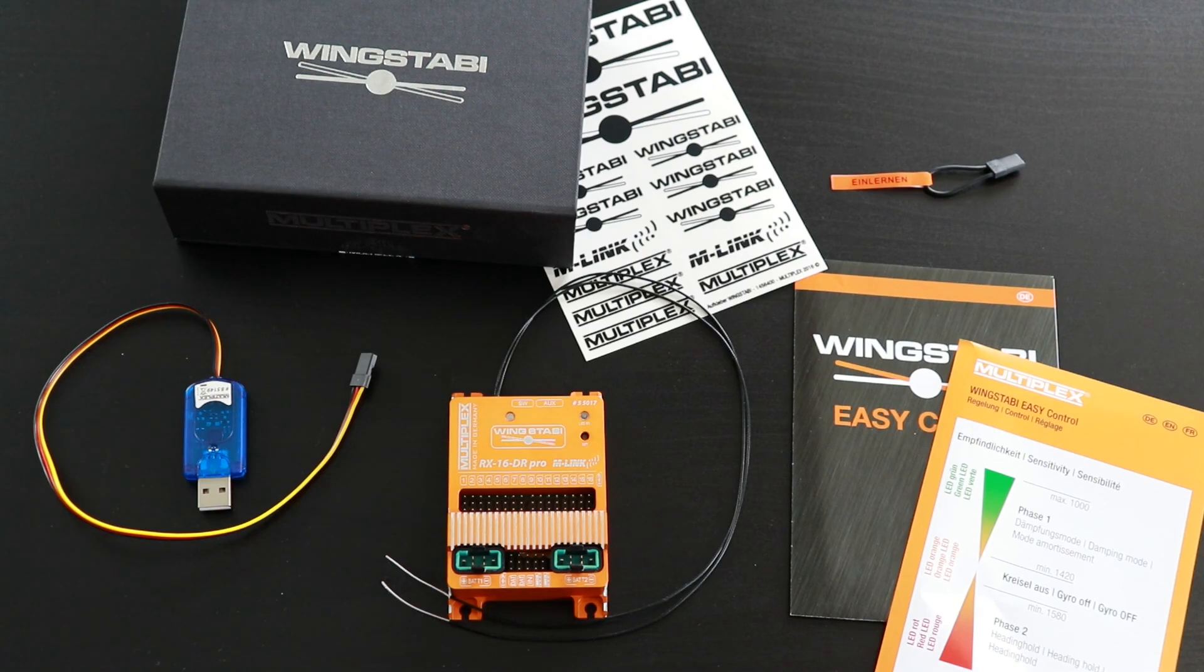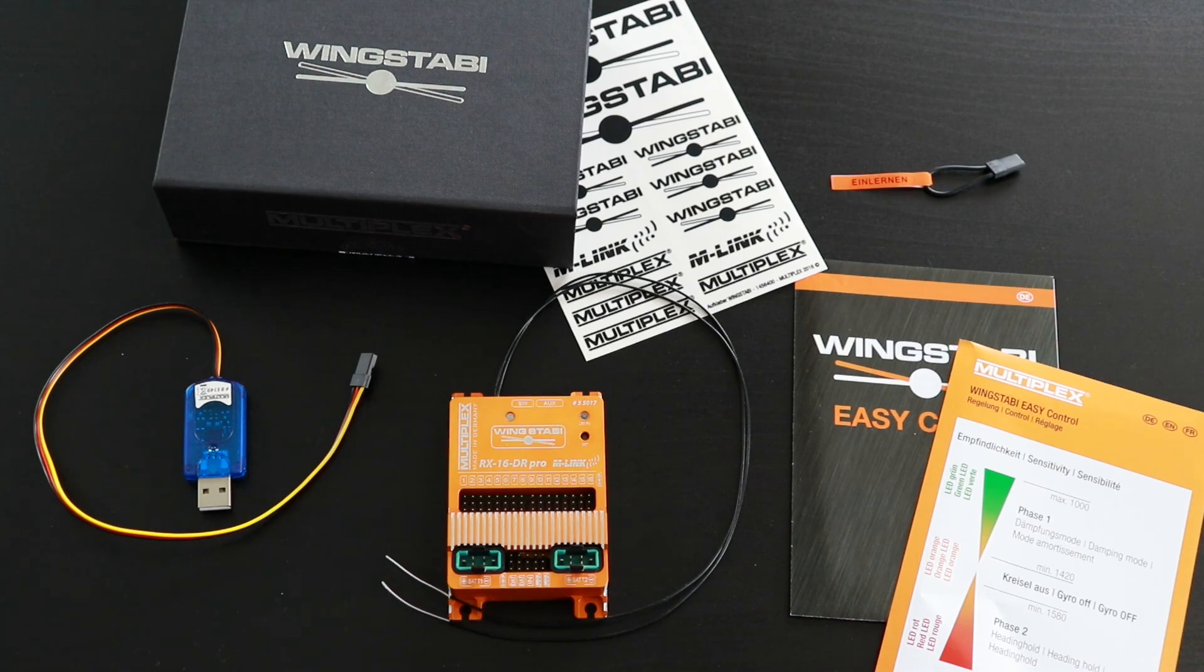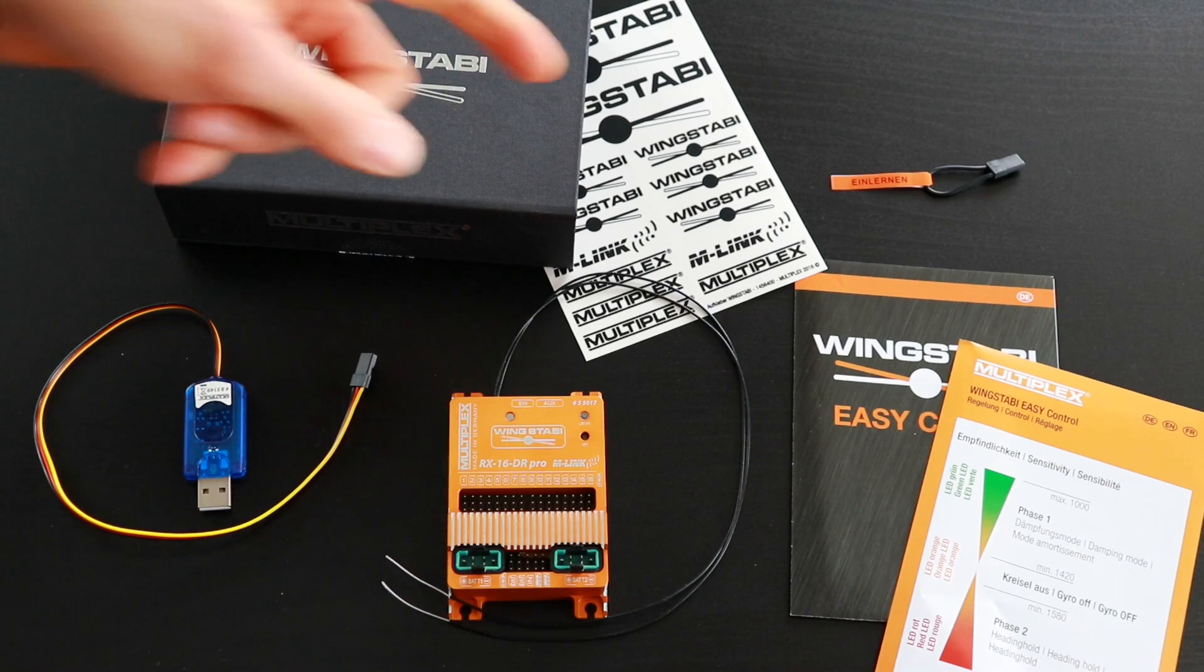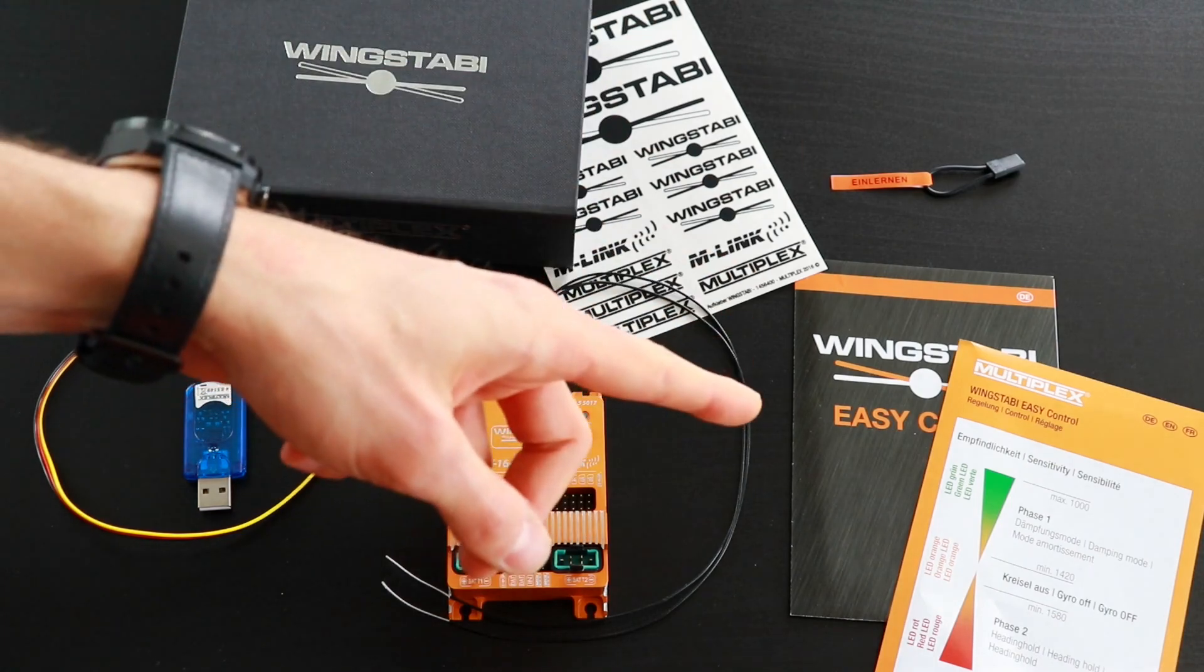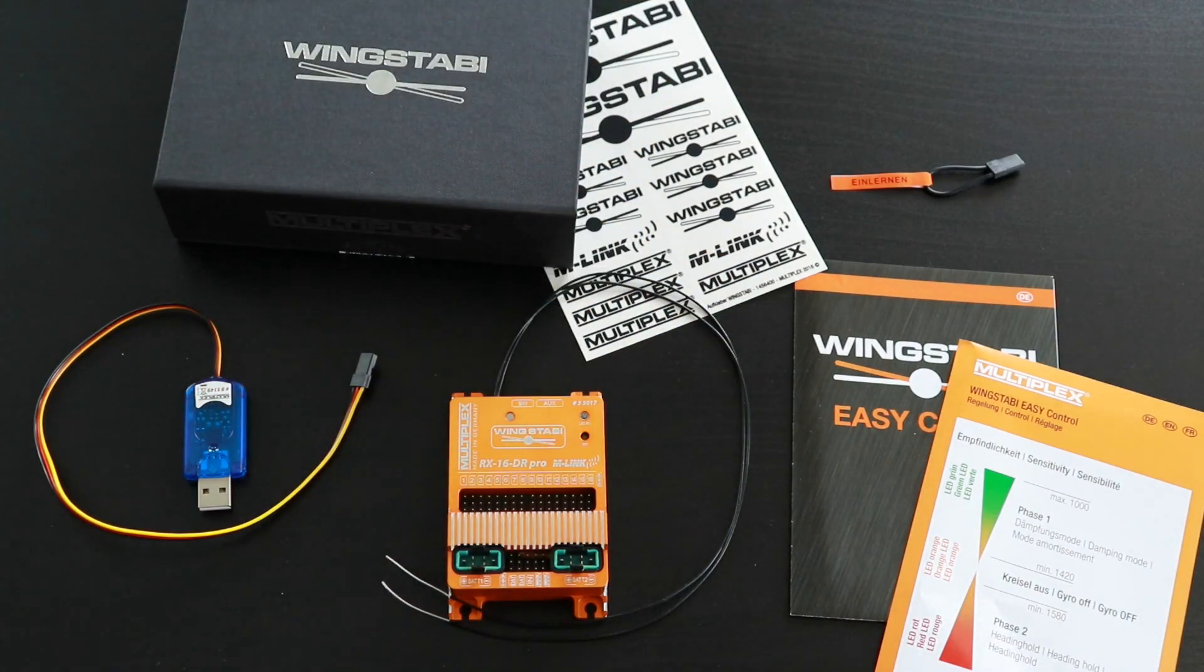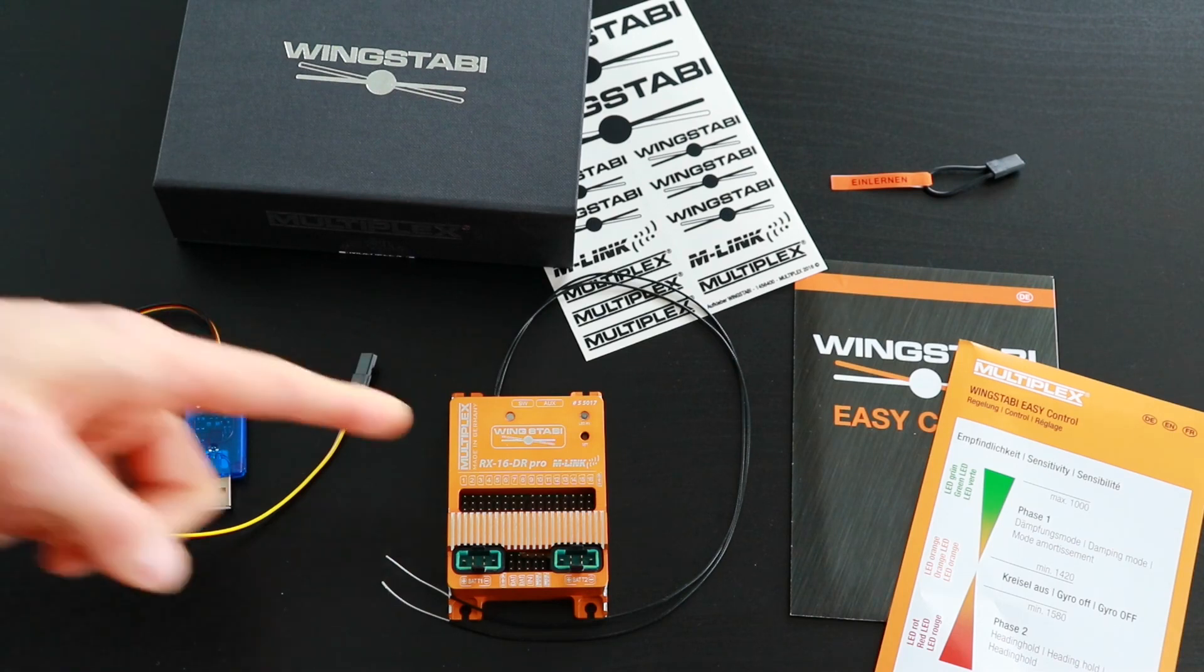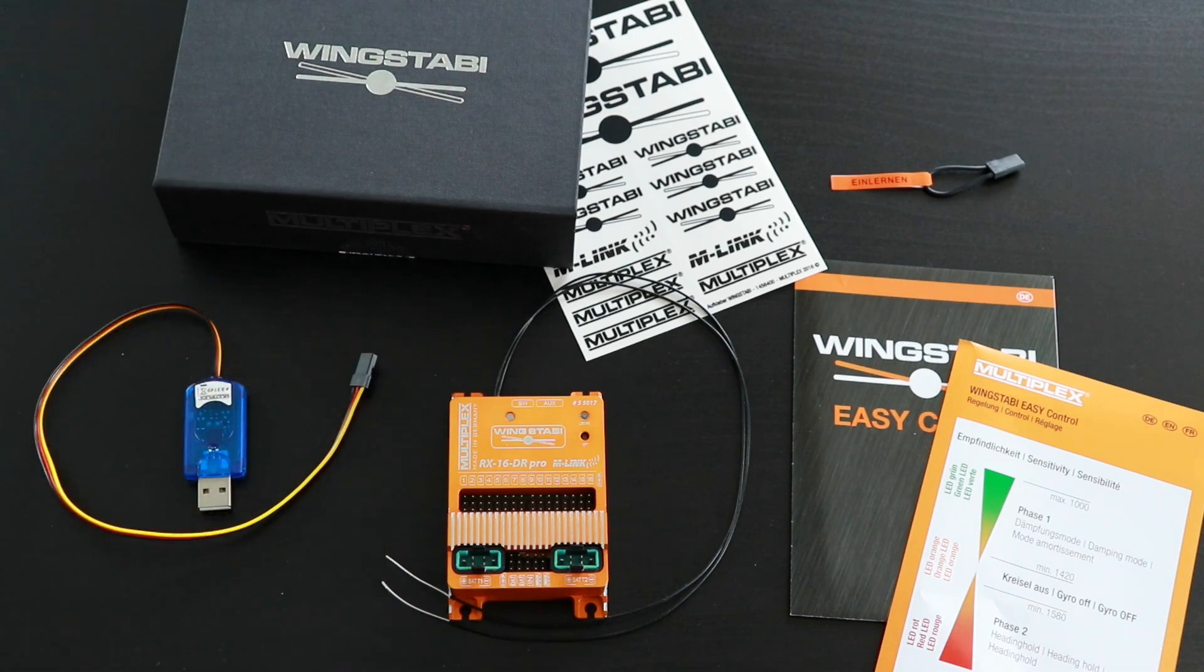So what do you get if you buy the Wing Stubby Easy Control System? You get the Wing Stubby itself, the cool stickers, the quick start guide, and the teach-in plug. If you buy the classic Wing Stubby, you get the Wing Stubby, the PC interface, and the instruction manual. In the next step I will show you how you make the Wing Stubby Classic System within one click to the Wing Stubby Easy Control.